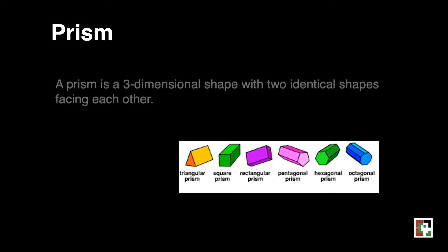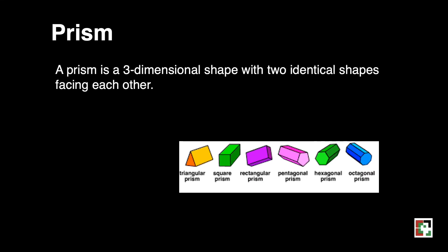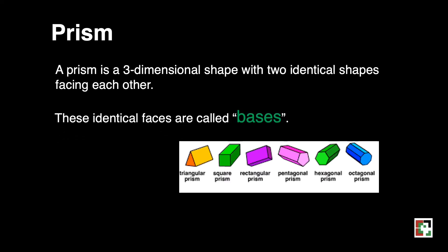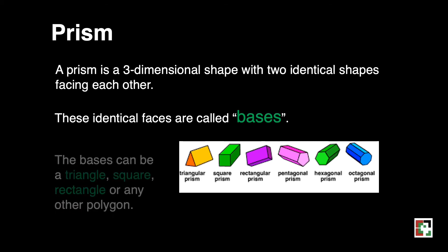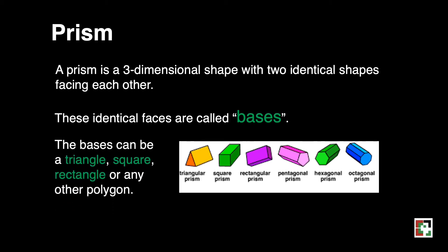What are prisms? A prism is a three-dimensional shape with two identical shapes facing each other, and these identical faces are called bases. The bases can be a triangle, square, rectangle, or any other polygon.